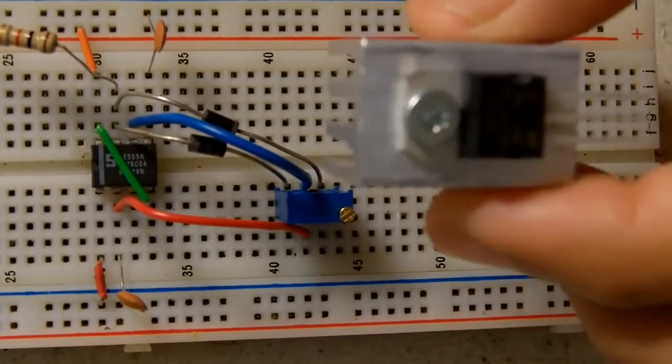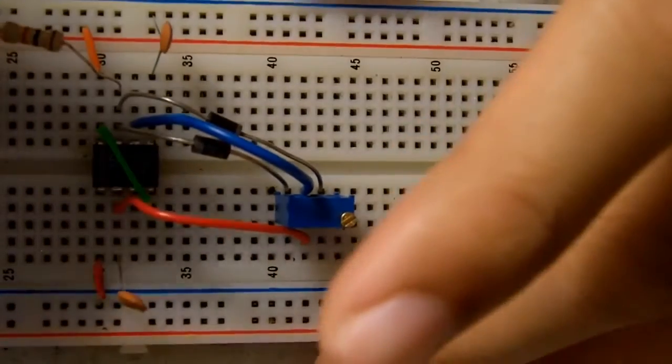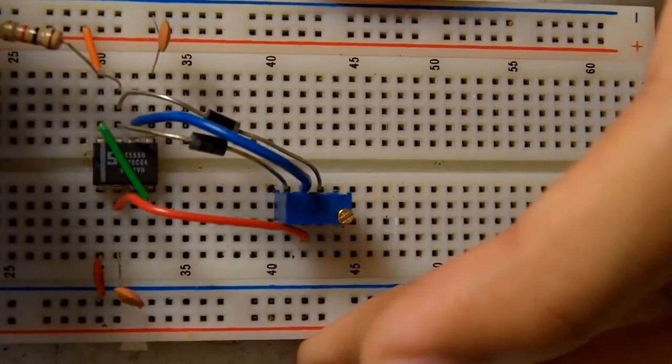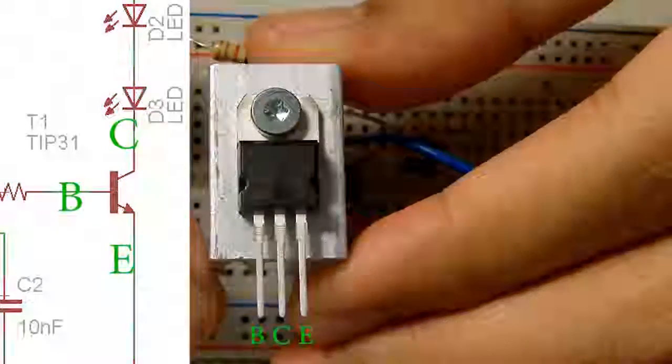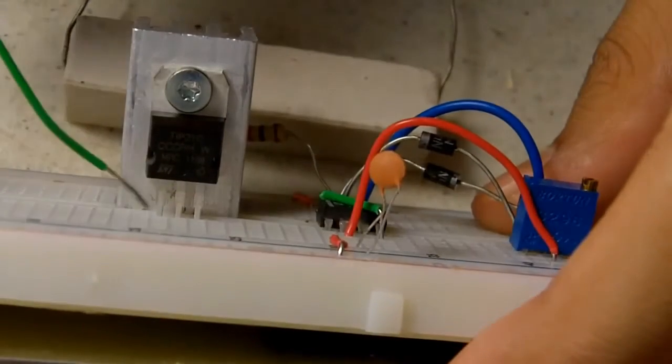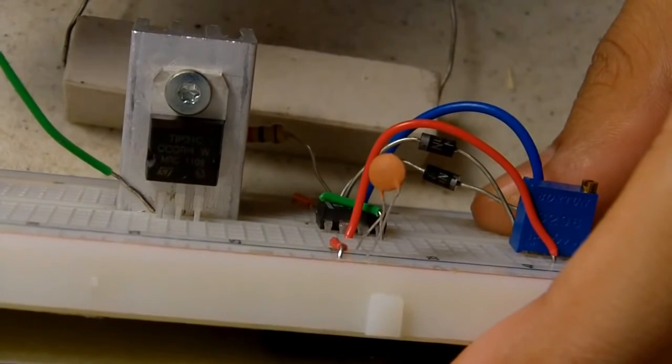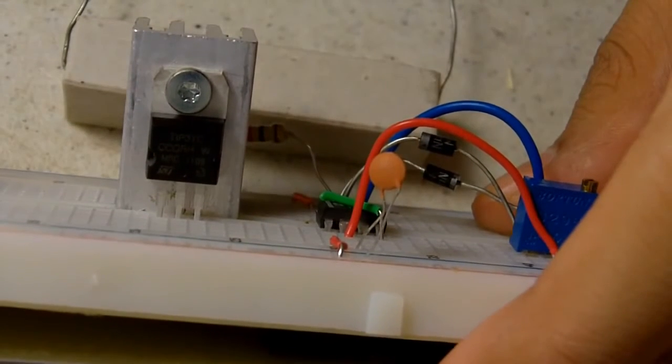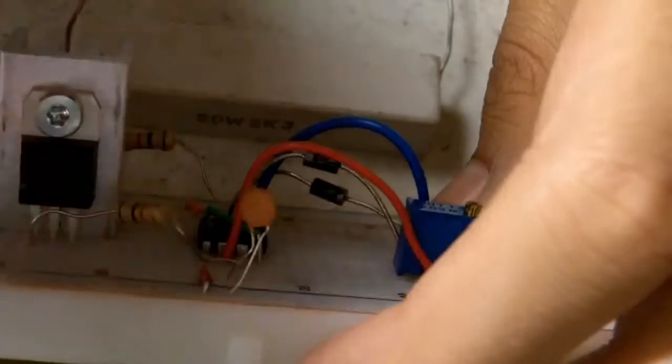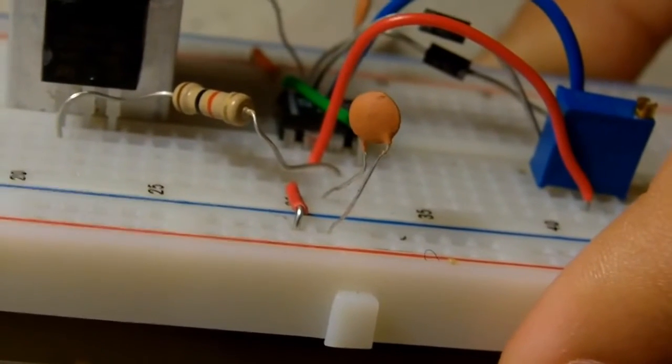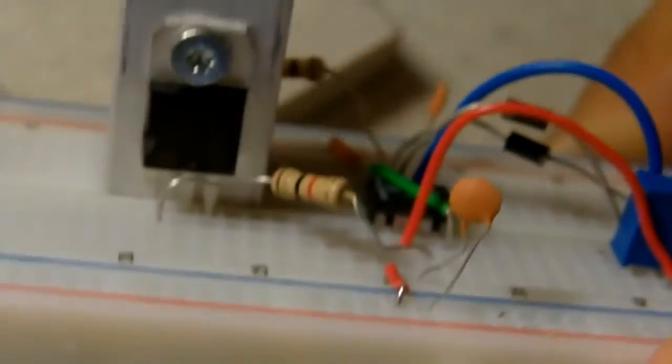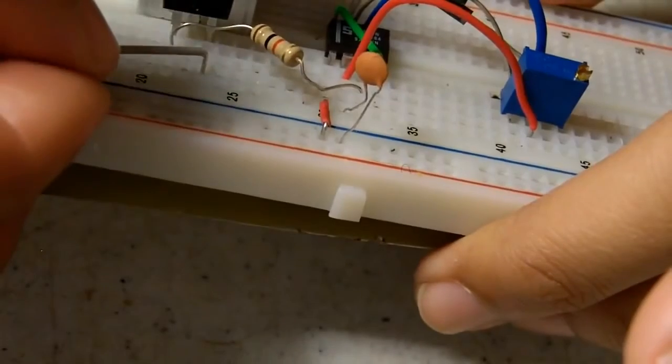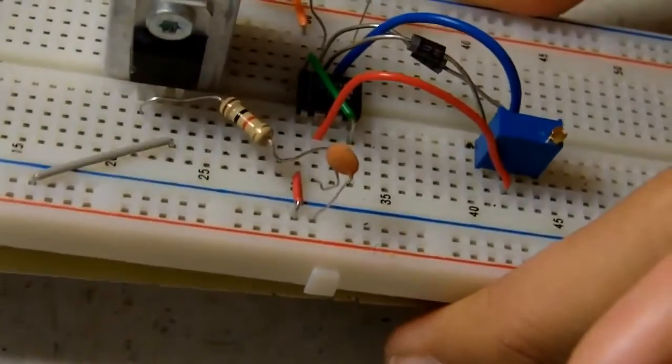Get your NPN transistor, plug it where you want to. We're going to plug pin one, or base, to pin three with a 1k resistor. We're going to plug the emitter to ground. The emitter is the third pin, or if you don't want to call it the emitter, pin three of the transistor.